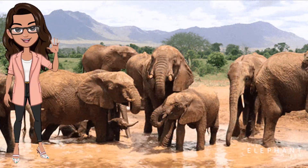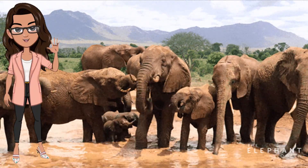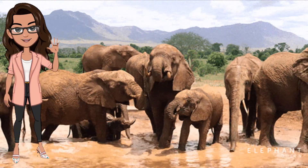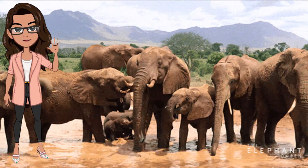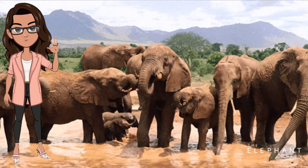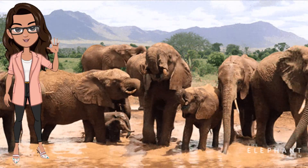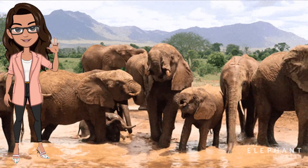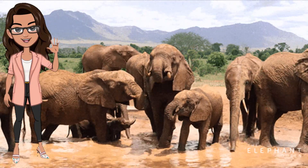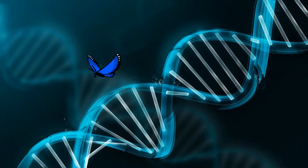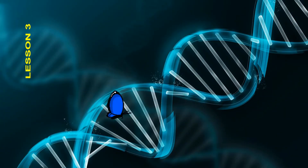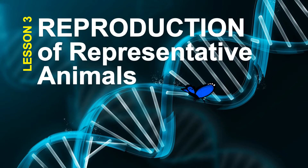In this lesson, we will understand key concepts about the complexities of reproduction in animals and synthesize our learning at the end. This lesson will also allow you to appreciate the true importance of why continuity of species is important. Ladies and gentlemen, our lesson today — Lesson 3: Reproduction of Representative Animals.